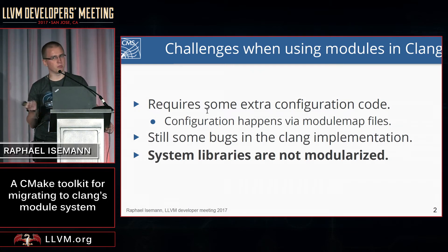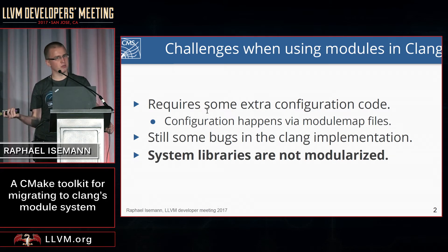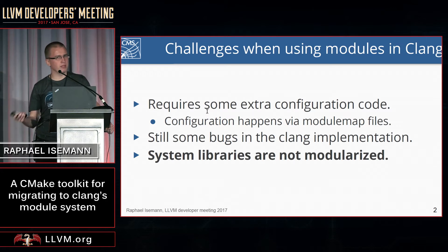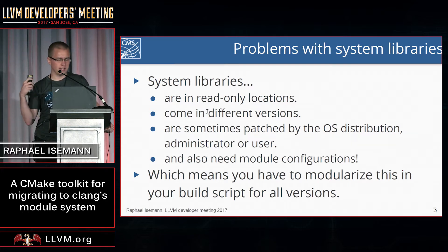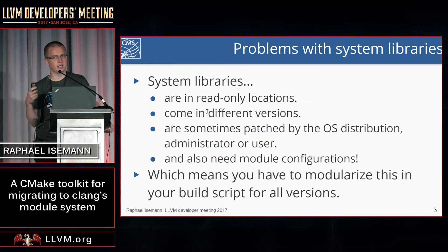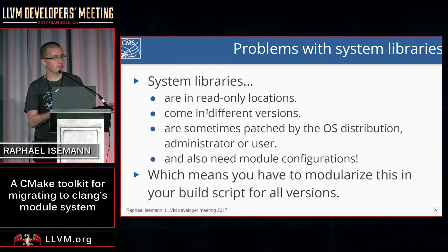System libraries are at the moment not modularized with Clang's module system, for several reasons — mostly because maintainers don't want to modularize them, either because they don't have time or because it's very Clang-specific at the moment. System libraries are in read-only locations, so we can't place the configuration files for Clang there. They come in different versions, they get patched by literally everyone — from the operating system to the administrator to the user. Everyone is editing these files and changing things and moving headers around, so it's hard to actually write a configuration for them.